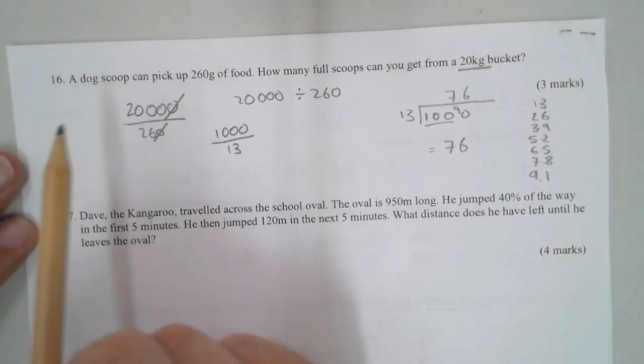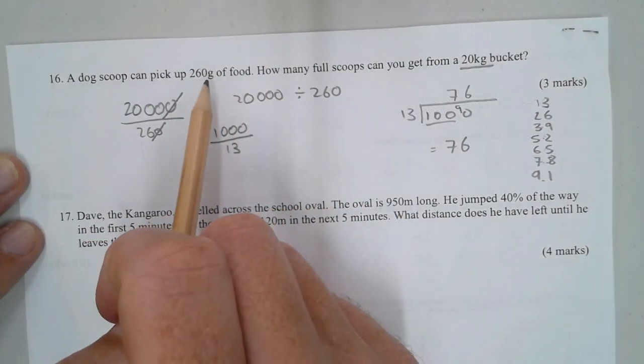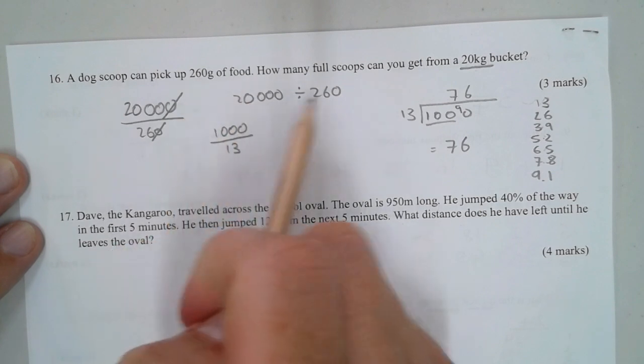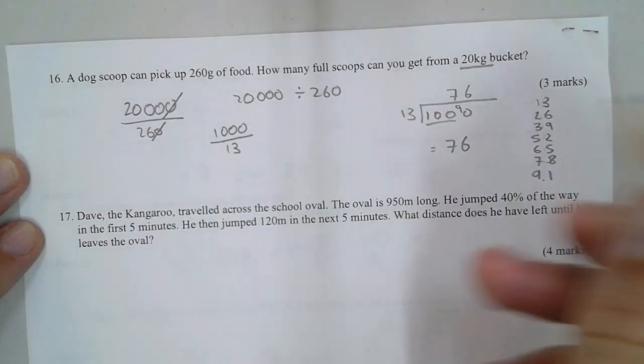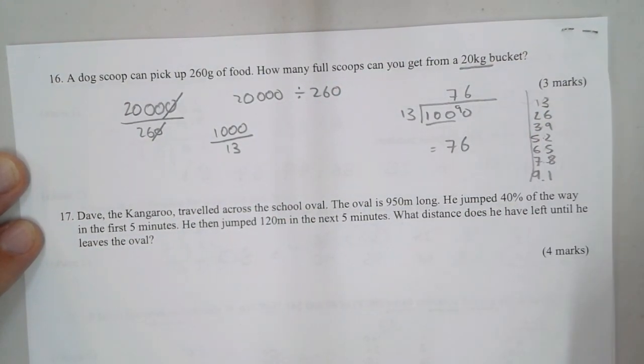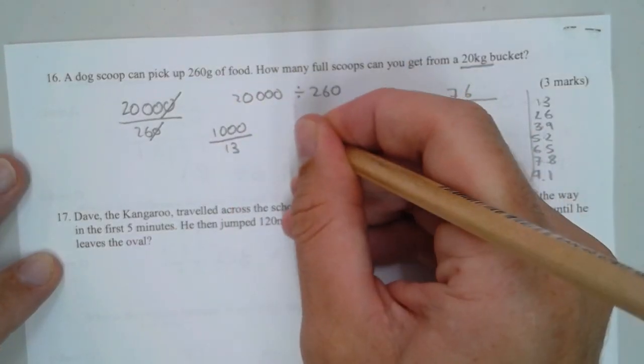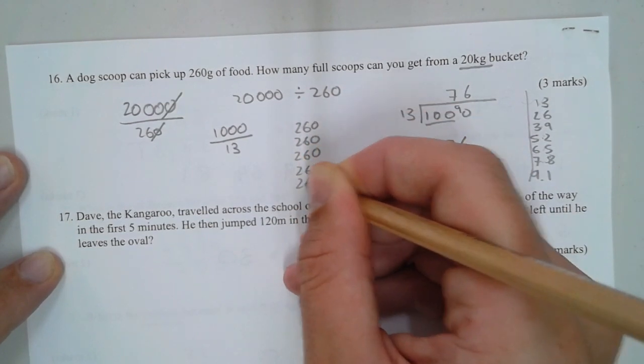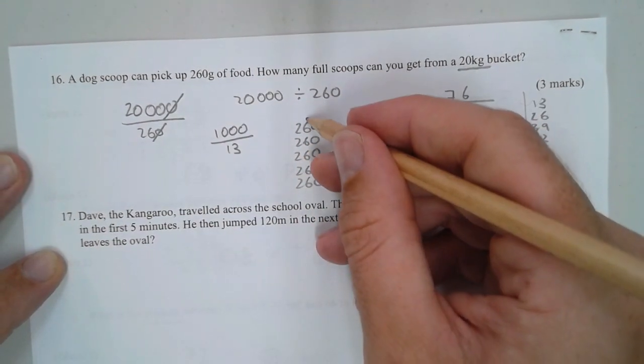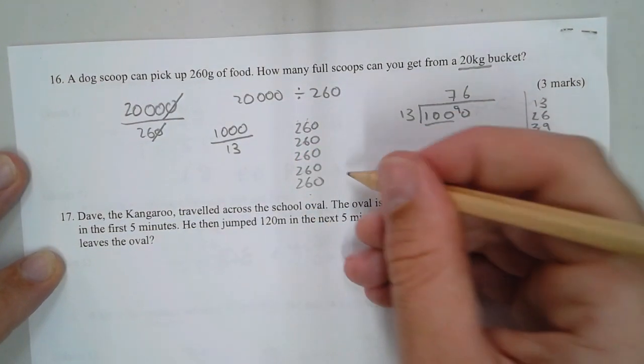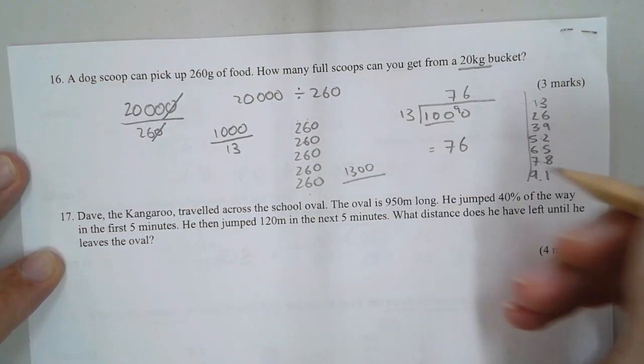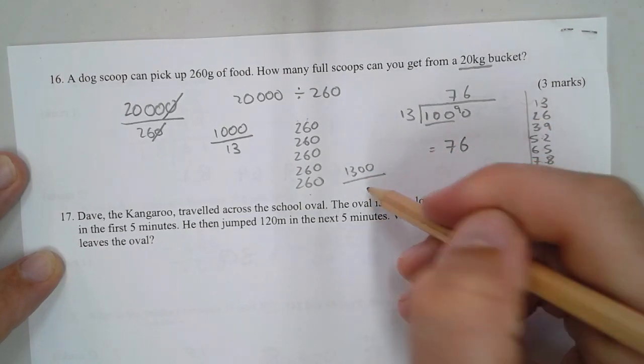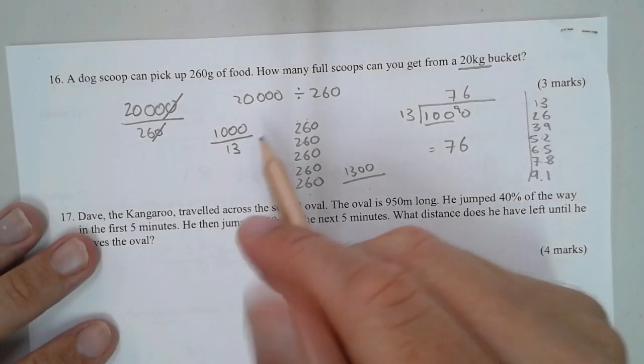Alternatively, you could keep going up in your times tables. You could work out how much 5 lots of 260 add up to. That's going to be 300 plus 1,000, so you get 1,300, and then multiply that by 5 each time until you get to your 20,000. You'd still get 76.